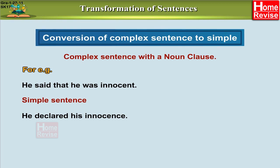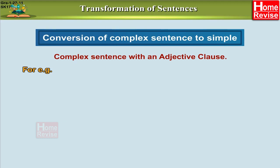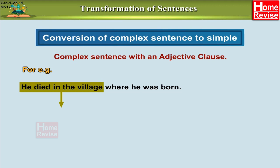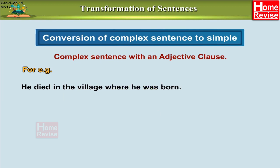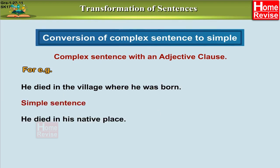Let's take one more example. This is a complex sentence having an adjective clause: 'He died in the village where he was born.' Here, 'he died in the village' is the main clause, and 'where he was born' is the subordinate adjective clause. The simple sentence is: 'He died in his native place.'